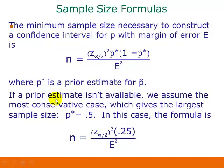Now, if we have no idea or if a prior estimate isn't available, then we assume the most conservative case, which gives us the largest sample size, and that would be when p-star is equal to 0.5. In other words, if we have no way whatsoever of estimating our sample proportion, then we go with the most conservative estimate, which is that our sample proportion is just one half or 0.5. In this case, the formula is a little simpler. We take our critical value and square it, times 0.25, and divide by E-squared.